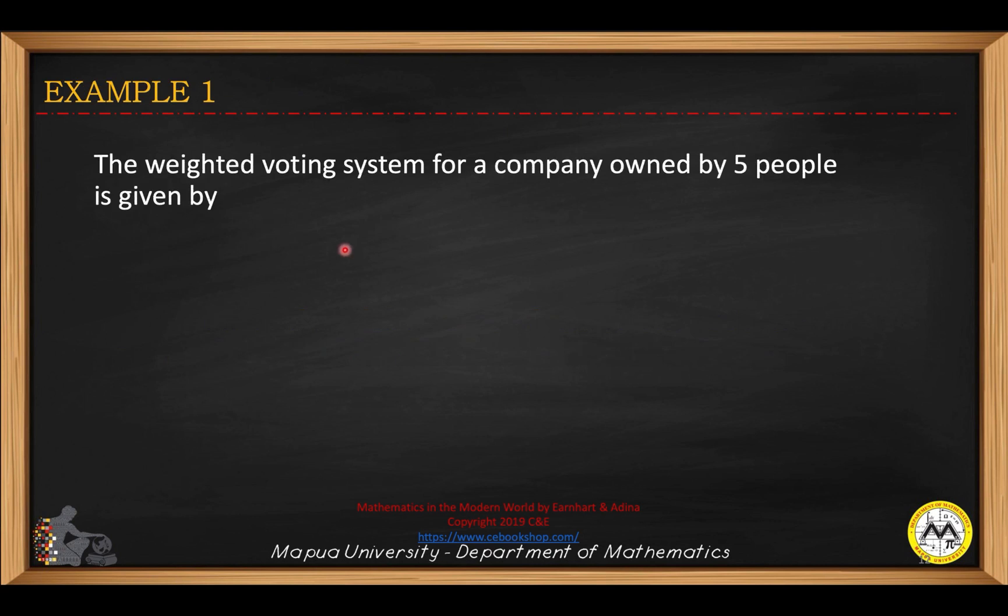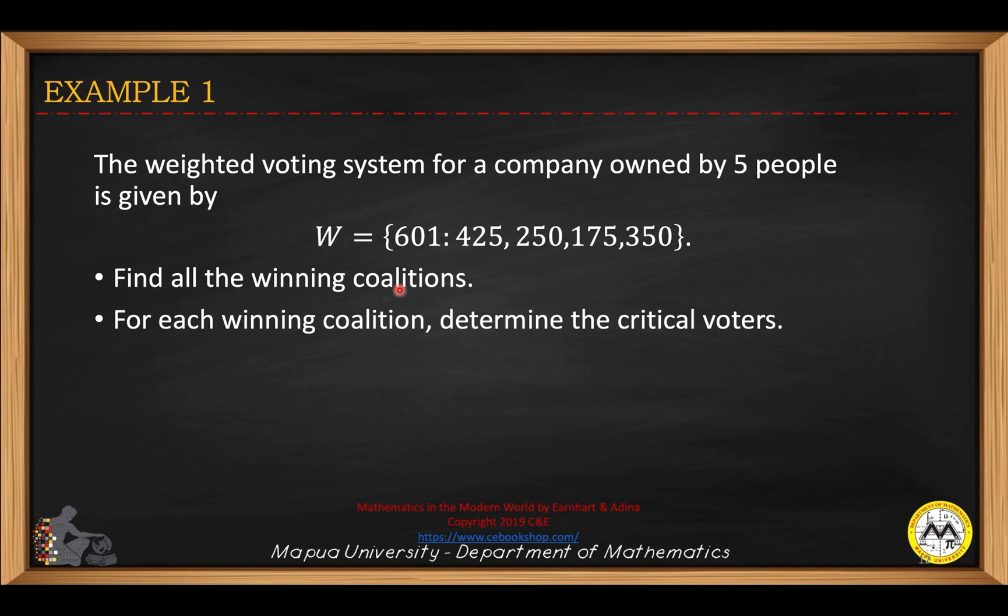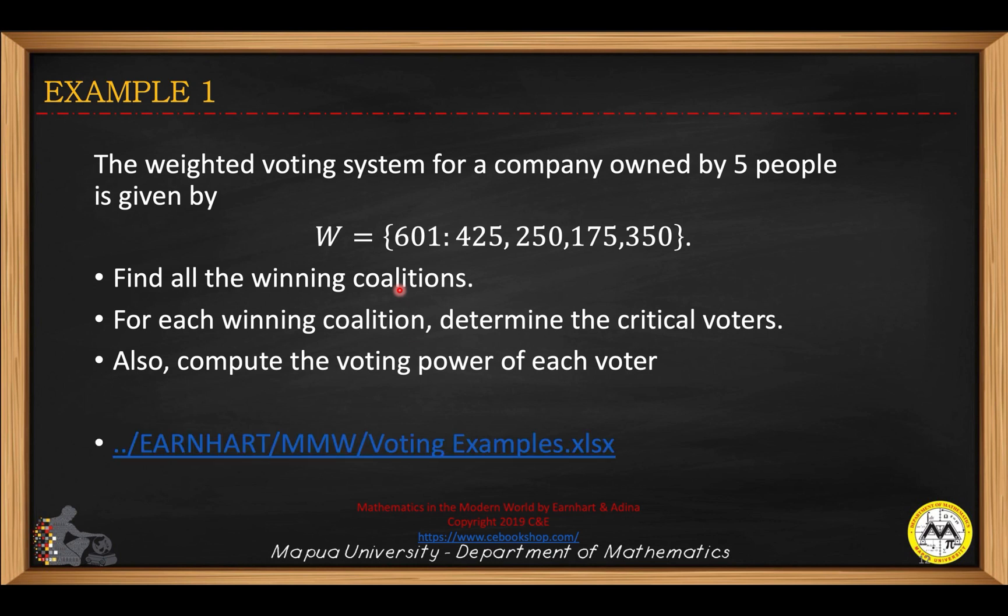Let's have example number one. The weighted voting system for a company owned by four people is given by the following: you have weights 425, 251, 75, 350 for the four voters respectively, and the quota is 601. We'll check if this is 50% plus one of the total votes. Find all the winning coalitions. For each winning coalition, we determine the critical voters and then we compute the voting power of each voter. So we compute the BPI.